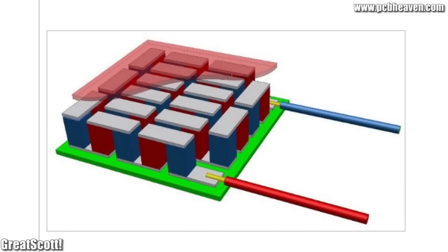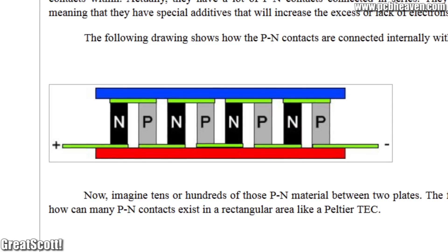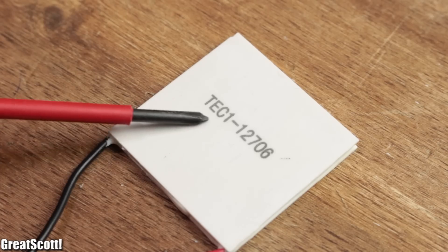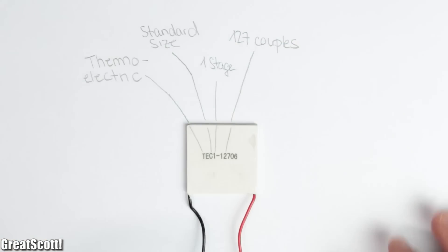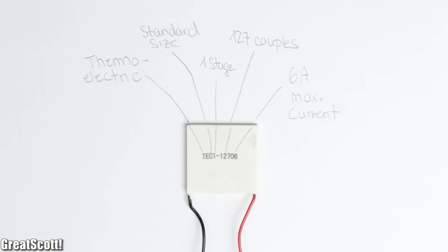But in comparison to thermocouples, we use quite a bit more couples which this time consists of semiconductors. The text on the front gives us a bit more information about the module itself. This one uses 127 couples and can handle a maximum current of 6 amps.